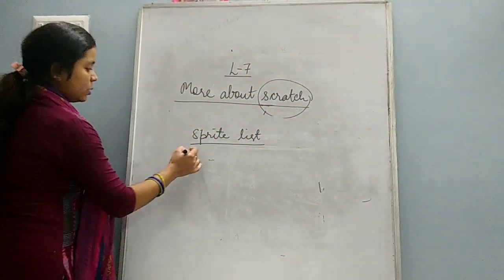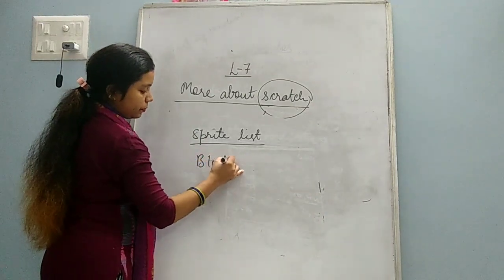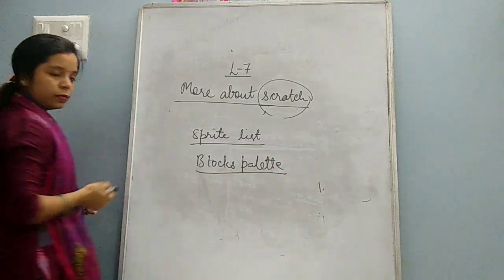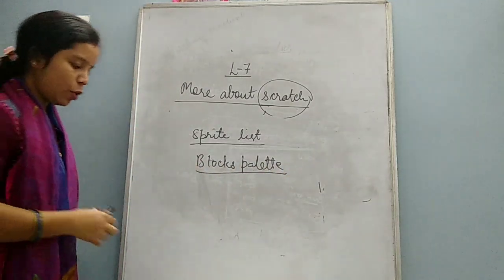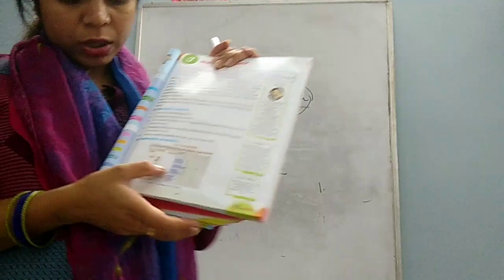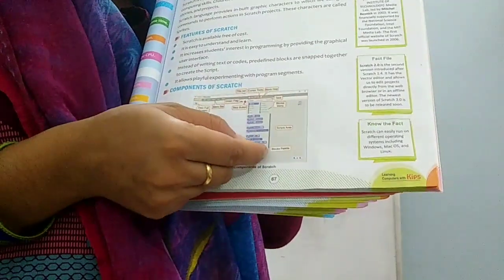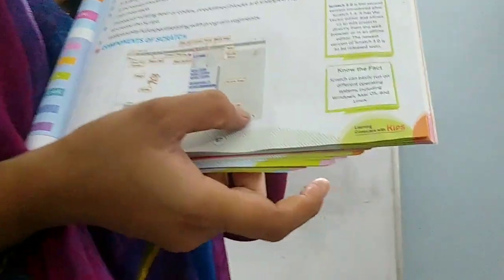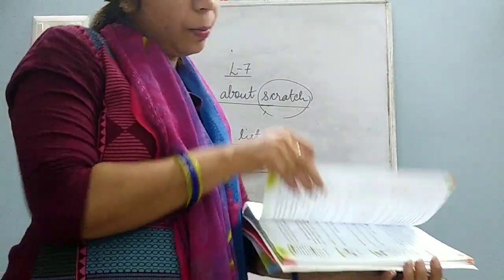Next one is blocks palette. What is this blocks palette? You can see in your book the blue color blocks. Where these blocks are present - this area is known as blocks palette. You can see it is labeled here also. So where these blocks are present, this area is called blocks palette.